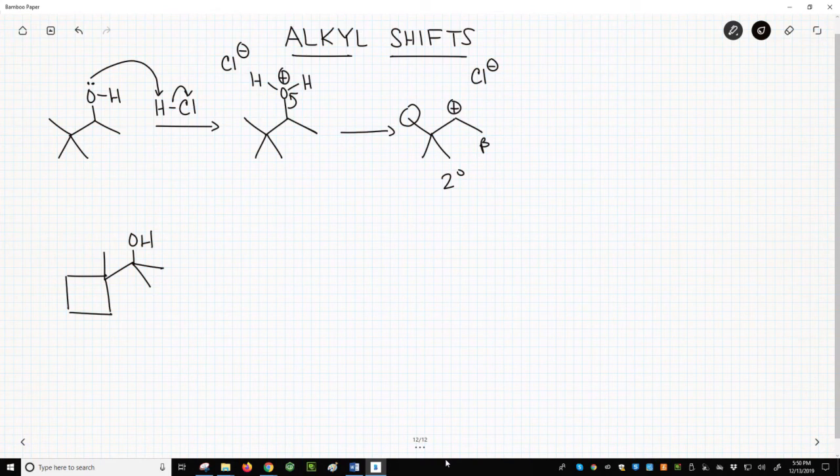Just as a hydrogen can shift with its electrons, alkyl groups can also shift with their electrons. That's the mechanism arrow.